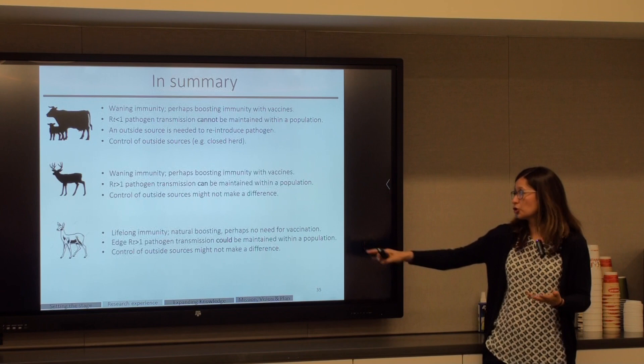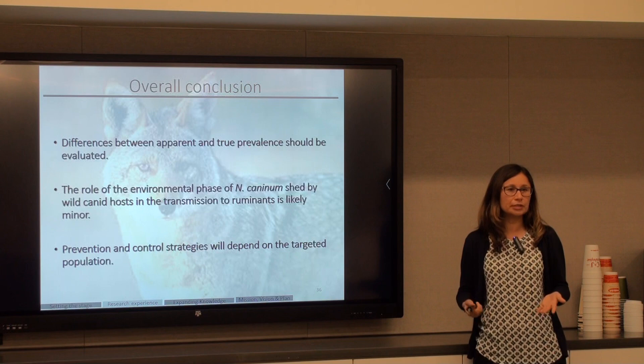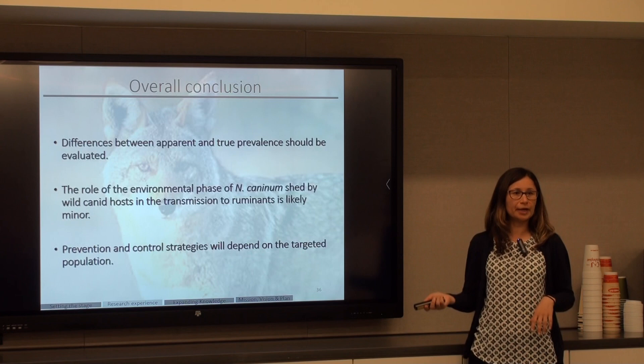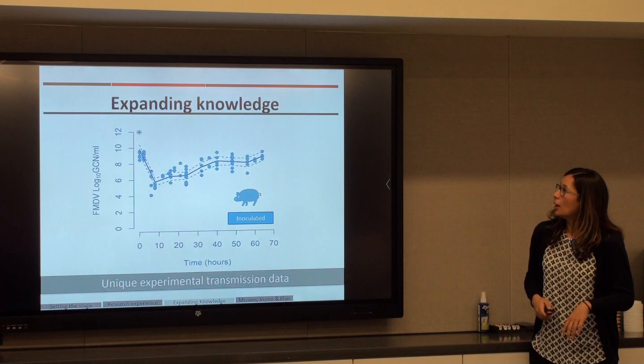The overall conclusions from the three projects are: first, differences between apparent and true prevalence should be taken into account in this type of study. Second, the role of the environmental phase of Neospora caninum shed by wild canids is likely minor. Third, prevention and control strategies will depend on the target population.